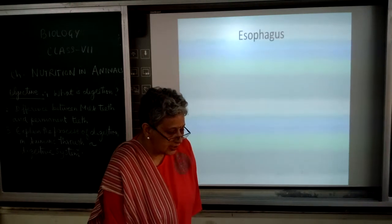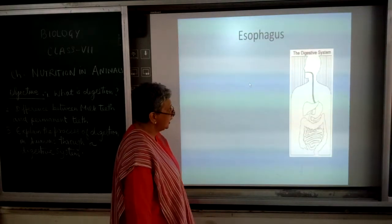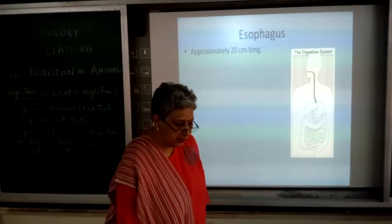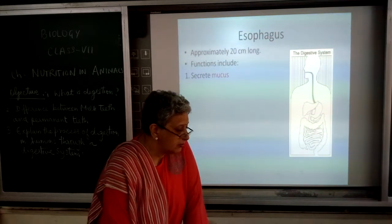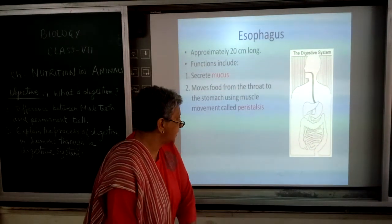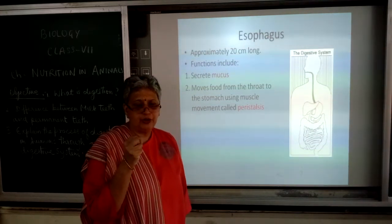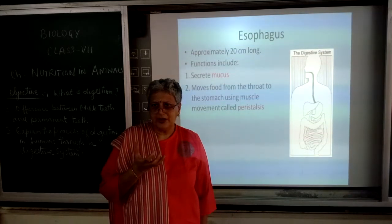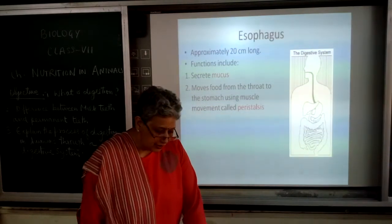Then we have the esophagus - the pipe connecting the mouth to the stomach, shown in green colour. It is approximately 20 cm long. Its functions include secreting mucus and moving food from the throat to the stomach using muscle movement called peristalsis or peristaltic movement. It is that movement which helps food go down into the stomach through this narrow pipe.